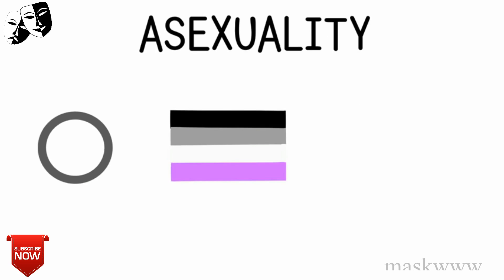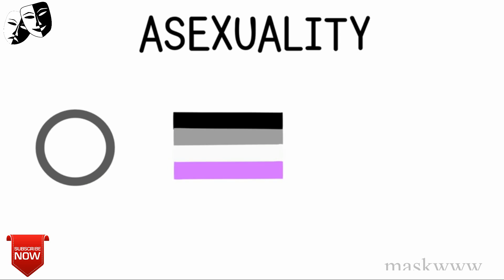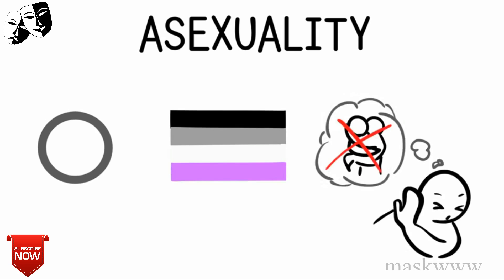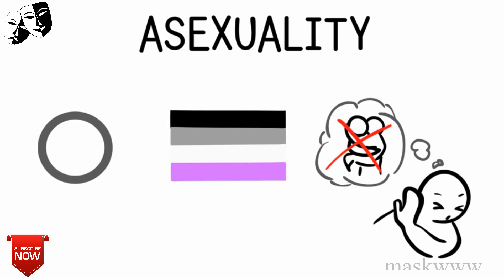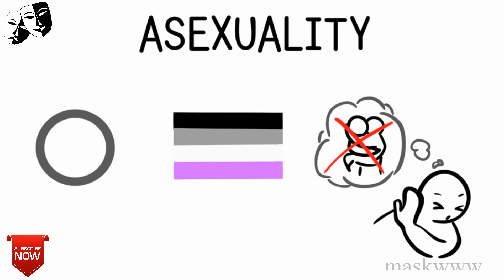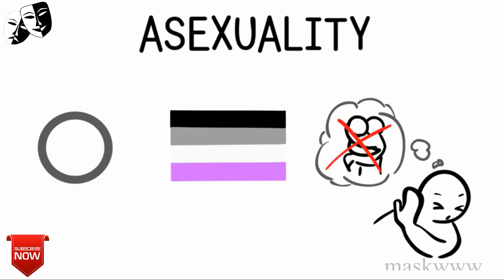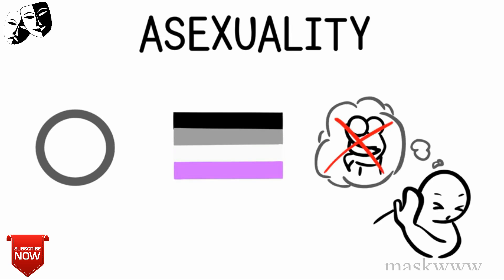6. Asexuality. Asexuality is one of the lesser known sexualities. It refers to someone who doesn't experience sexual attraction to any gender. This doesn't mean, however, that they never have relationships or sex, which are common myths about asexuality. Bojack Horseman, the TV show, explores asexuality through one of the major characters, Todd Chavez.